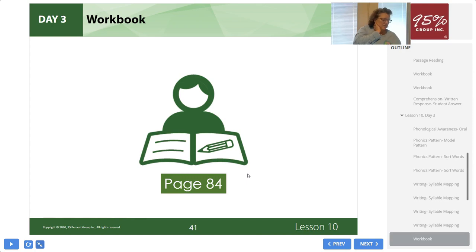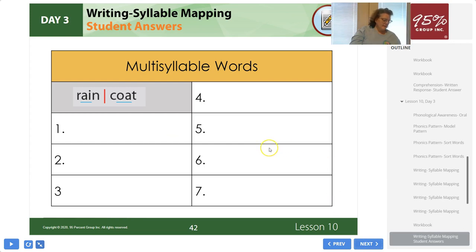Now it's your turn. Turn to page 84 in your student workbook. Here are the steps: find the vowels and underline them; mark a V connecting the vowels if the syllable follows the silent E pattern; if there are two consonants between the vowel sounds, draw a line between them; for each syllable, say the syllable type while showing the gesture, say the vowel sound and read the syllable; then read the word.